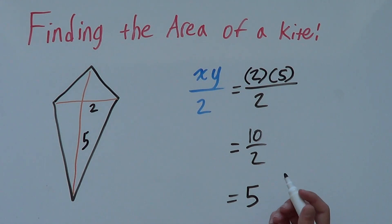And then, whatever units you're measuring in squared. So, for this example, our answer would be 5 units squared.